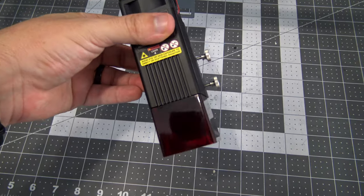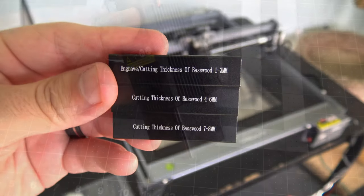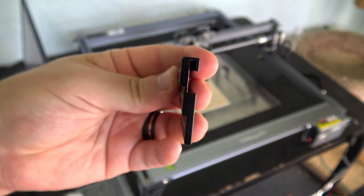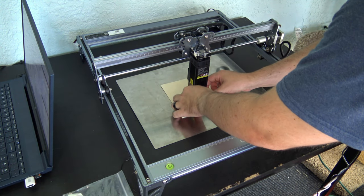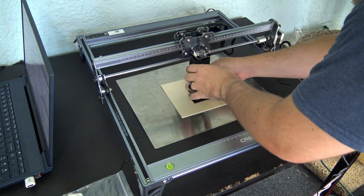The laser module is held onto the gantry with two thumb screws. Focus adjustment is done by placing the focusing guide on the material to cut, then loosen the screws and slide the laser module down until it rests on the focusing guide. Then tighten the screws and you are ready to cut.